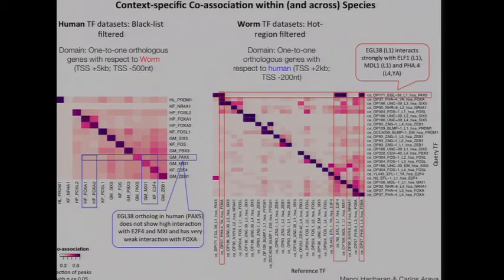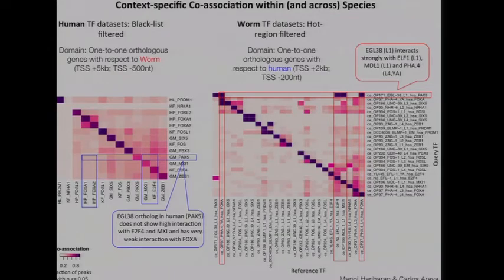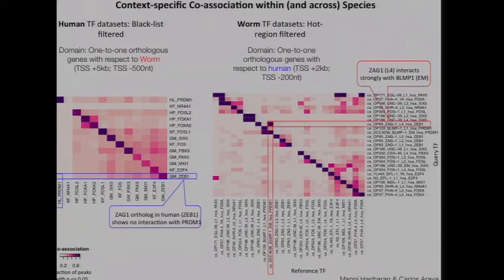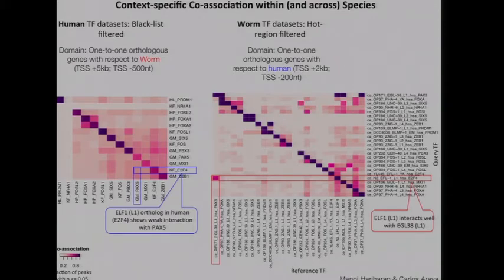Looking at factor EGL-38 in worms and asking who it co-associates with around promoters, it turns out to have three partners: two FAFOR data sets and EFL-1 and MDL-1. Then asking which of these are conserved in humans: the ortholog of EGL-38 is PAX5, and when you look at its orthologs, you don't see co-association. Similarly, ZAG-1 co-associates with BLMP-1, but its human homolog ZEB-1 does not associate with that partner. We repeated this and kept getting the same result — no conserved co-associations.